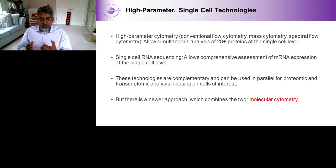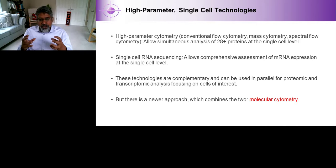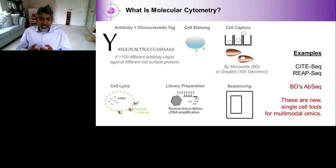High-parameter single-cell technologies that measure lots of different proteins or transcripts at once are really important for this type of work. High-parameter flow cytometry, mass cytometry like the CyTOF instrument, and spectral flow cytometry all allow simultaneous analysis of more than 28 proteins per cell. We can also invoke single-cell RNA sequencing, which allows comprehensive assessment of mRNA expression at the single-cell level. These technologies are complementary — they can be used in parallel for proteomic and transcriptomic analysis. But there's a newer approach that fuses these two technologies together, which I call molecular cytometry.